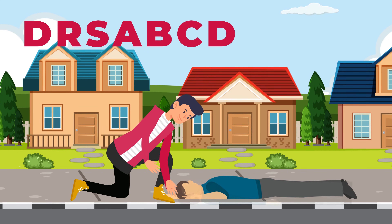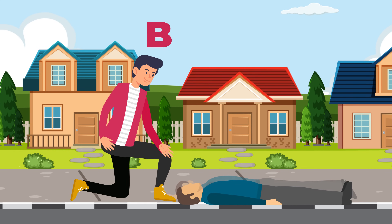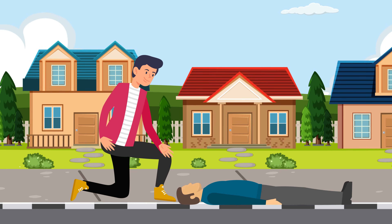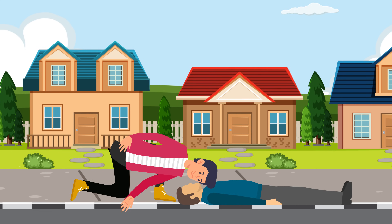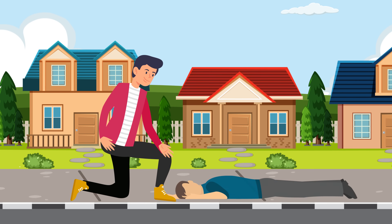Once you've cleared their airway, move on to B for breathing. Check that the casualty is breathing normally by seeing if their chest is rising and falling, by listening at their mouth for sounds of normal breathing, and by placing your cheek near their mouth and feeling for air. If the casualty is breathing normally, roll them into the recovery position and monitor and treat their condition until the ambulance arrives.